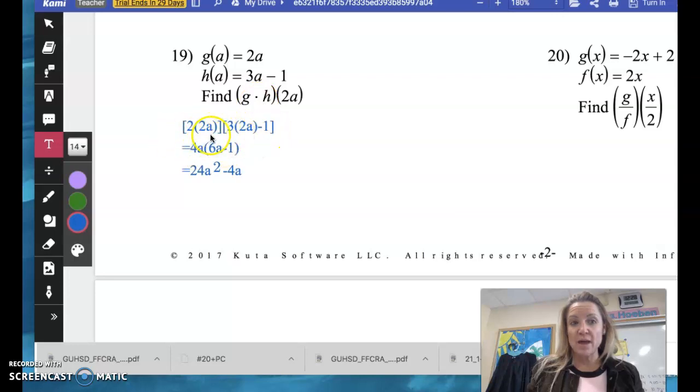So I'm going to have 2 times the 2a, and then I'm going to have 3 times the 2a minus the 1. So I simplified within the brackets first on each